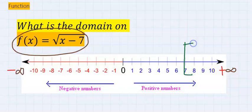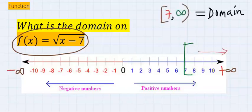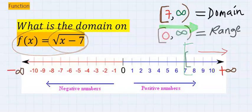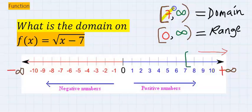Hence our domain is 7 and is moving towards positive infinity. This means that 7 is allowed into this function. And if 7 is the least number permitted in this function, the corresponding least value will be the range.